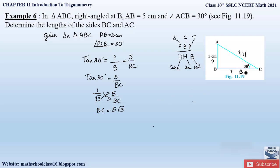Therefore BC = 5√3 centimeters. Now we have to find AC. Since we now know two sides of the triangle, we could apply the Pythagorean theorem — that is the first method. Alternatively, we can use the same trigonometric approach. The side to find is AC, so we consider AC and the known side AB, giving us perpendicular by hypotenuse.